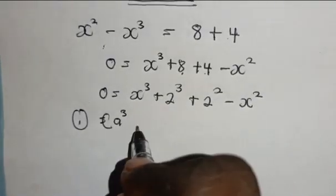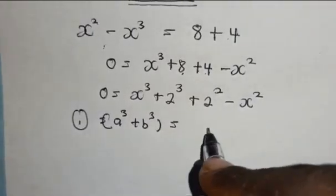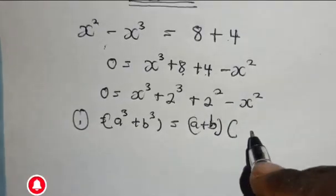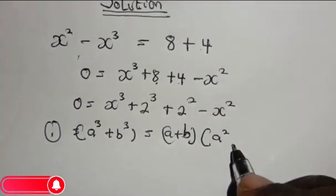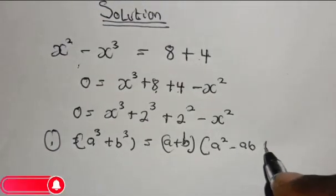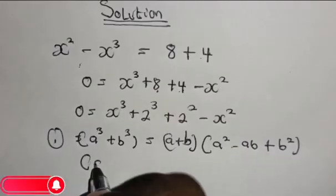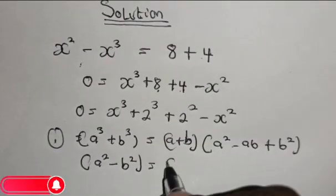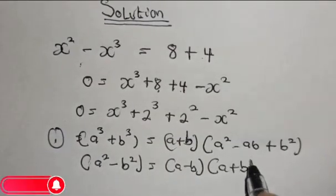The first property is that when you have a raised to the power of 3 plus b raised to the power of 3, this is equal to a plus b in brackets multiplied by a squared minus ab plus b squared. The second one is difference of two squares, which is when you have a squared minus b squared, this is equal to a minus b in brackets multiplied by a plus b.